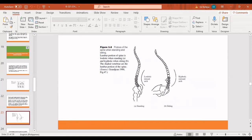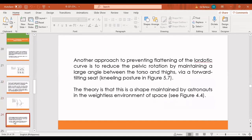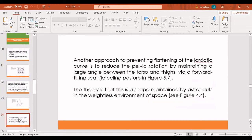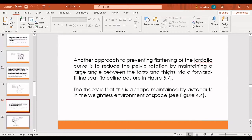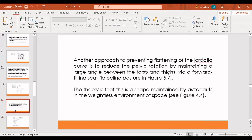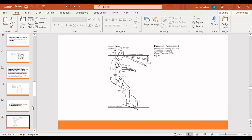Another approach to preventing flattening of the lordotic curve is to reduce the pelvic rotation by maintaining a large angle between the torso and thighs. And you can see that one here again on the kneeling posture here on the 6 basic seating posture. This is actually a good position for preventing flattening of the lordotic curve. And this theory is that this is a shape maintained by astronauts in the weightless environment of space. It's actually a representation of the theory about how we can maintain our shape in the weightless environment of space.